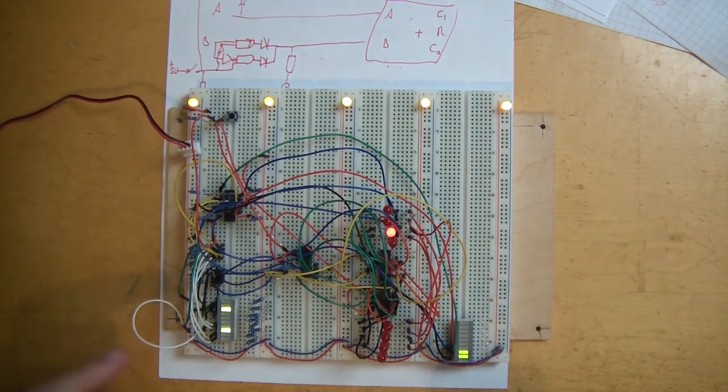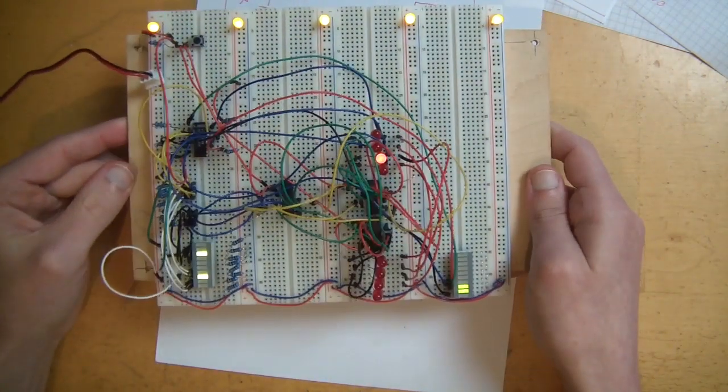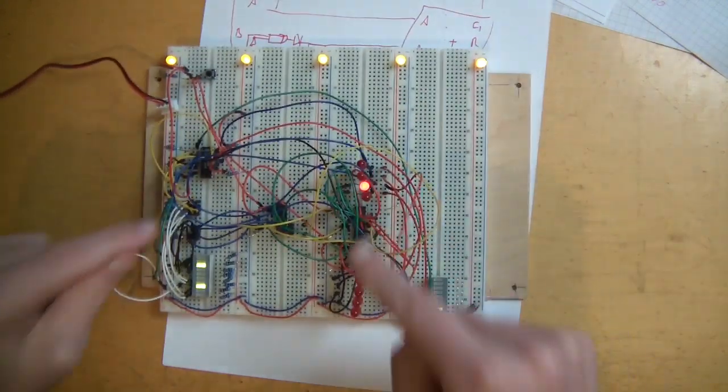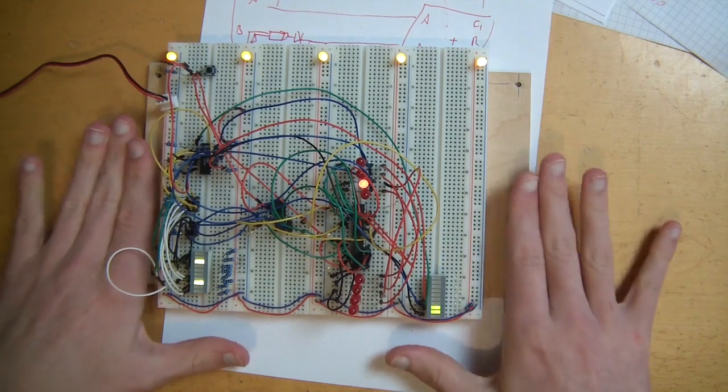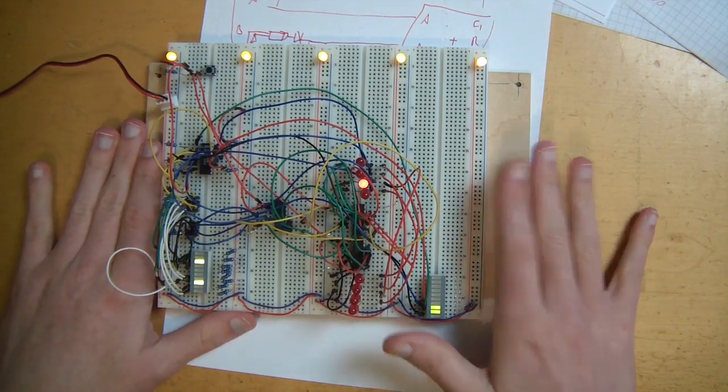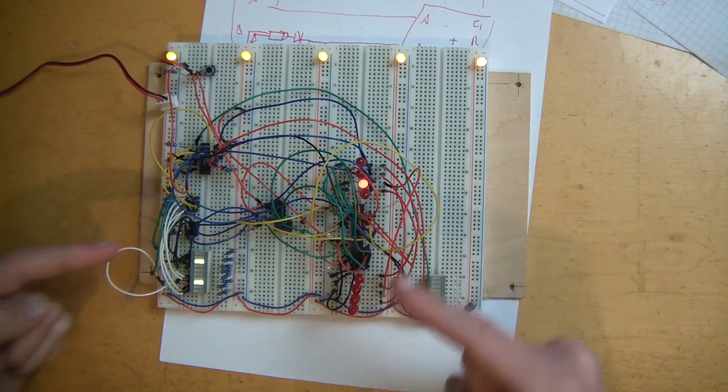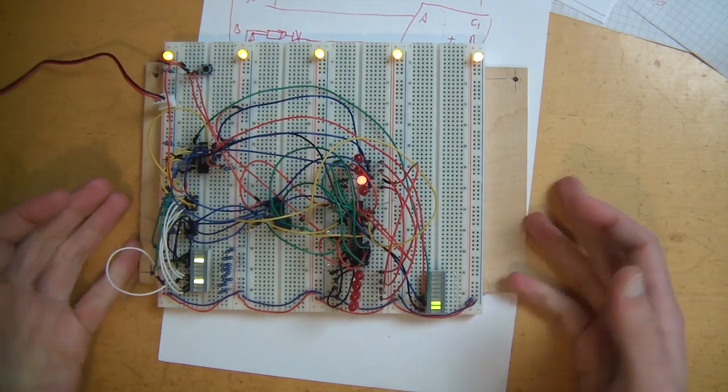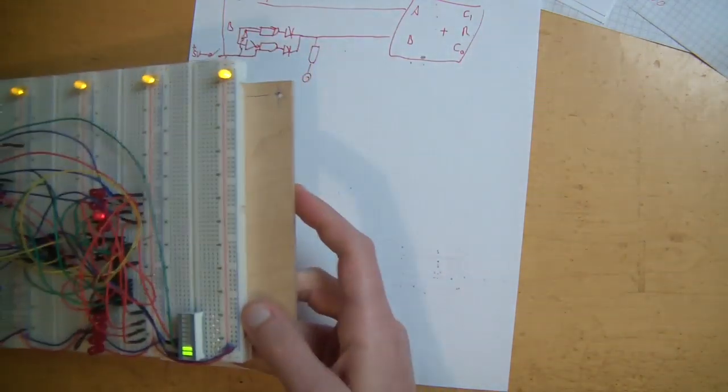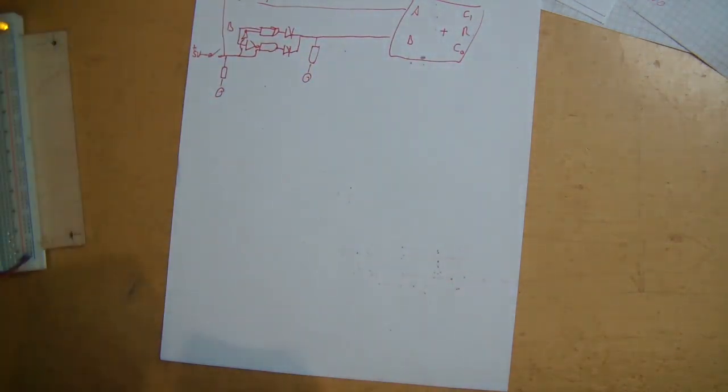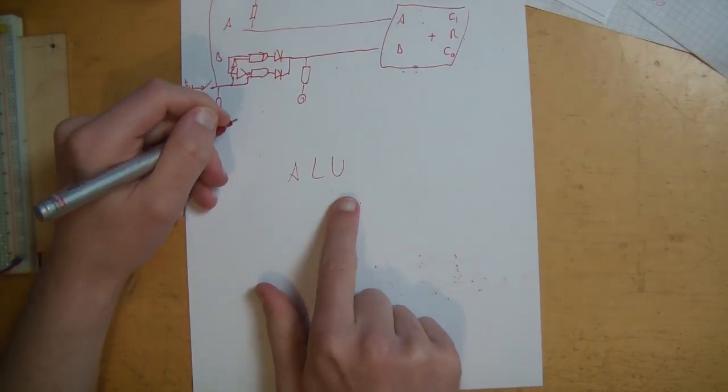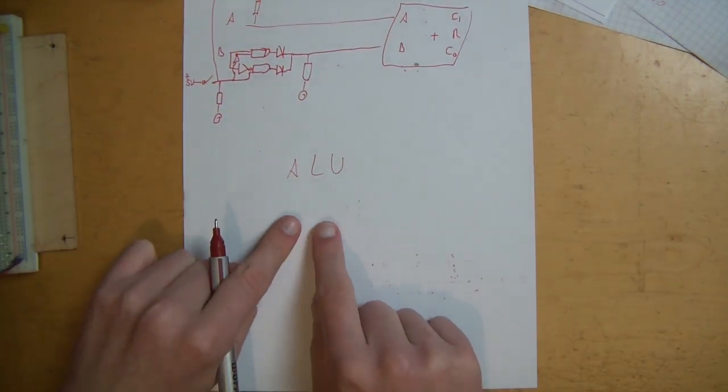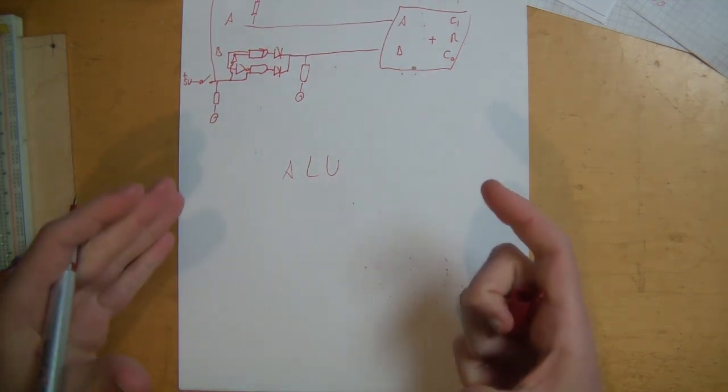Isn't that cool? We have addition and we have subtraction in one circuit and we can choose. Now that might not look like much, but this is one of the major components of your computer. And this is actually the first component that will go into our 8-bit computer as it is. This is called an ALU, an arithmetic logic unit. That is the part of your computer that does all the calculations.